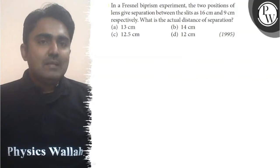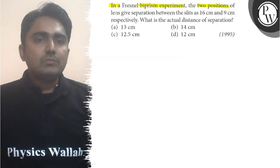Hello kids, let's read this question. It says that in a Fresnel Biprism experiment, the two positions of lens give separation between the slits as 16cm and 9cm respectively.